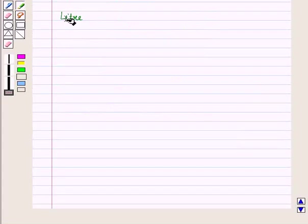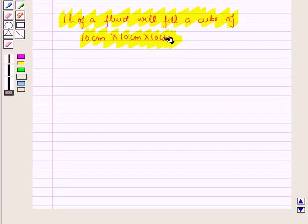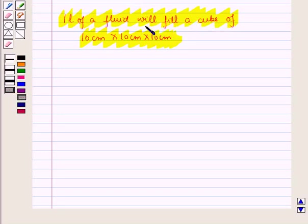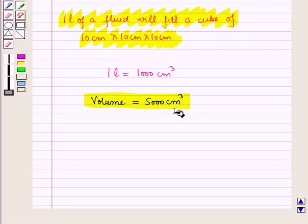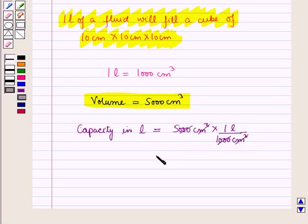Another unit of capacity is the liter. 1 liter of fluid will fill a cube of 10 cm × 10 cm × 10 cm, a cube with dimension 10 centimeters. Thus 1,000 cubic centimeters has a capacity of 1 liter, so 1 liter = 1,000 cubic centimeters. If the volume of a container is 5,000 cubic centimeters, its capacity in liters is 5,000 cm³ × (1 liter / 1,000 cm³) = 5 liters.